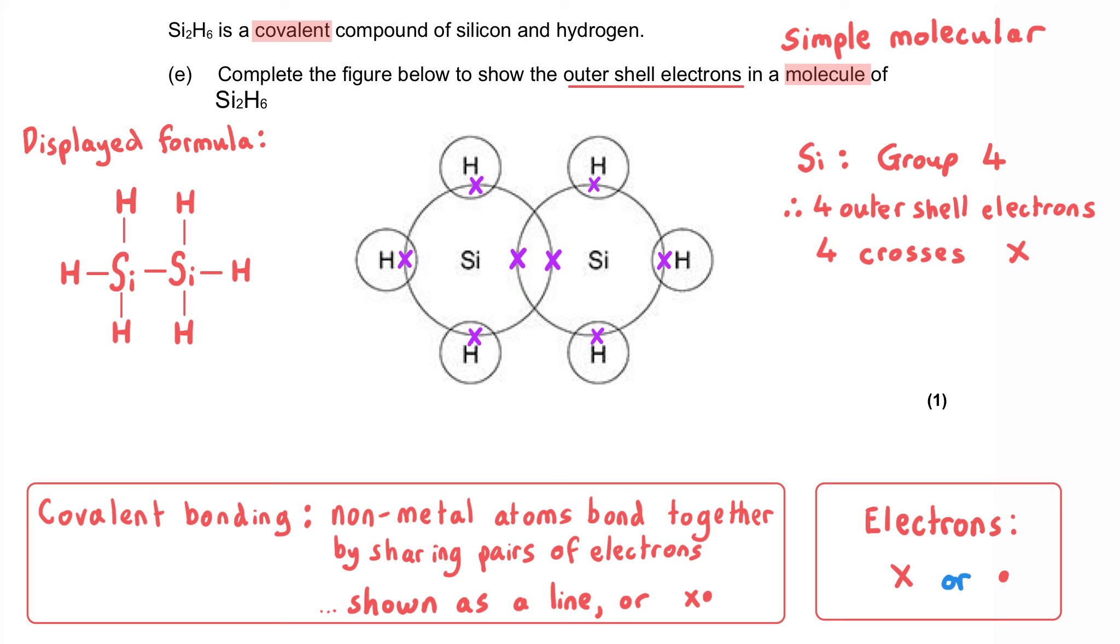This is the single covalent bond between those two silicon atoms. And then where each of those six hydrogen atoms meets the silicon, we need to put a dot. And so each one of these six spaces is a covalent bond with a dot and a cross, or two crosses in the case of this one in the middle. And this is what we need to do to get the single mark.